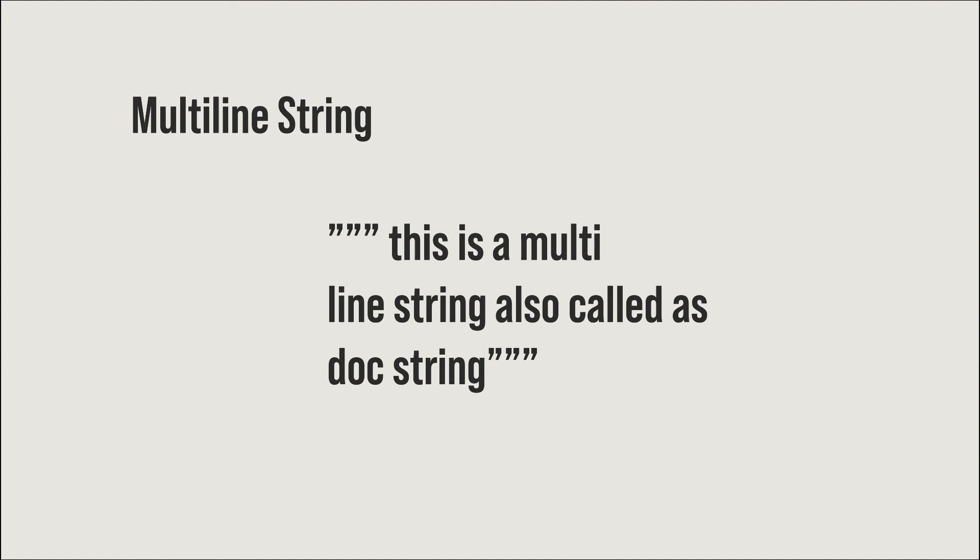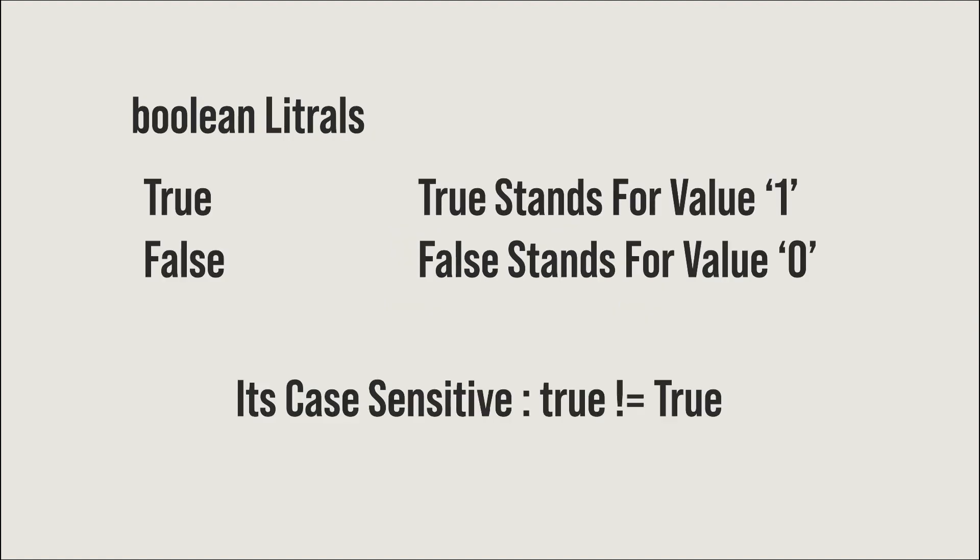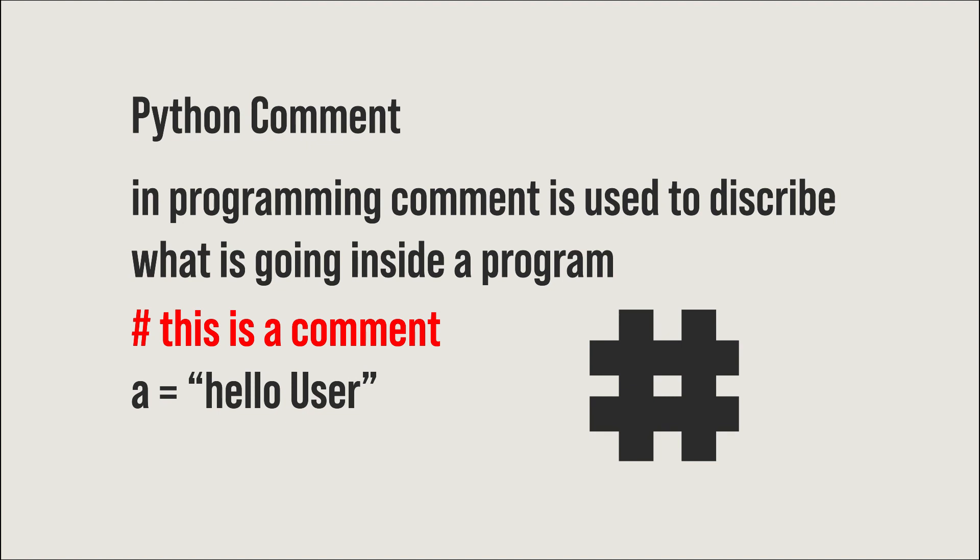Coming to boolean literals — we have two values: True and False, where True stands for value 1 and False stands for value 0. Python is case sensitive, so you cannot use a lowercase 't' for True — it must be a capital 'T'. Make sure you write the correct spelling since Python is case sensitive.